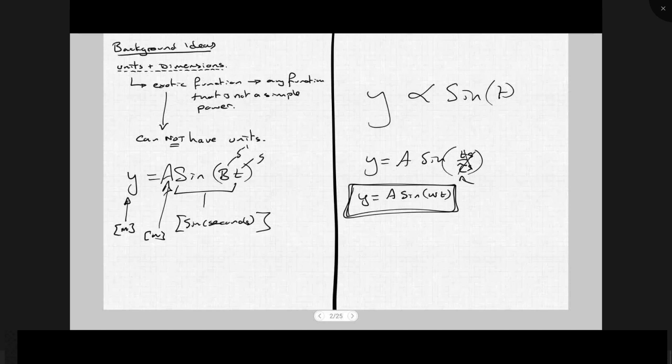Angles do not have units in the same way that we talk about units. Now, you might think, okay, well, that's not right, because we've got degrees, we've got radians. If any of you are geeky enough to have looked into this, there's something called gradians, which is why your scientific calculator will go from D to R to G, and then loop back to D again. Okay, well, they're not units in the same way that we talk about units here.